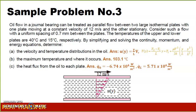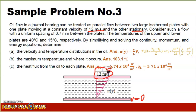In sample problem number three, we are given a journal bearing. For a journal bearing, the oil flow can be treated as a parallel flow between two large isothermal plates maintained at a particular temperature. One plate is moving at a constant velocity of 12 meters per second and the other plate is stationary. The spacing between the two plates is 0.7 mm.